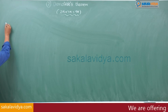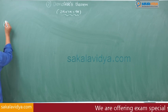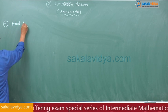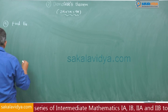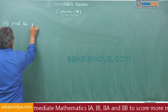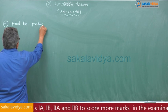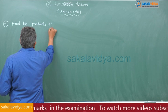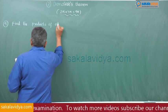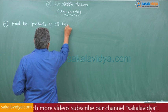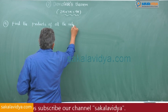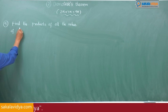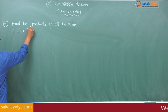9th question. Find the product of all the values of (1 + i) whole to the power of 4 by 5.